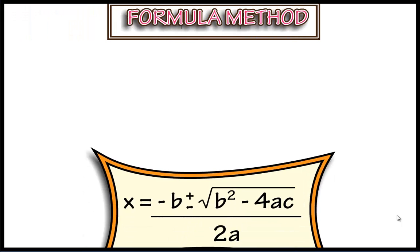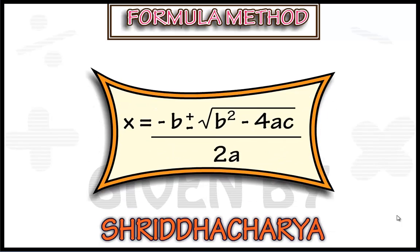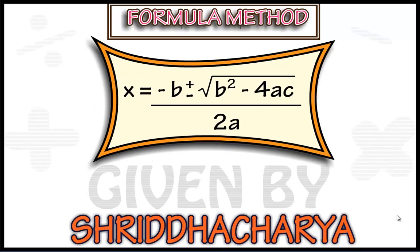Now let us move on to another method known as the formula method. As the name suggests, we use the formula to get the roots or the values of the variable x. You might have heard the formula: x equals minus b plus or minus root of b square minus 4ac upon 2a. This was given by the Indian mathematician Sridharacharya. After seeing the derivation, you would surely say how easy it was.